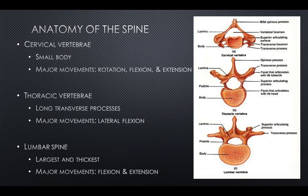The vertebrae have distinct features which separate the different levels. Cervical vertebrae have a small body and allow for the major movements of rotation, flexion, and extension. Thoracic vertebrae have long transverse processes and allow for the major movement of lateral flexion. The lumbar spine vertebrae are the largest and thickest and allow for the major movements of flexion and extension.